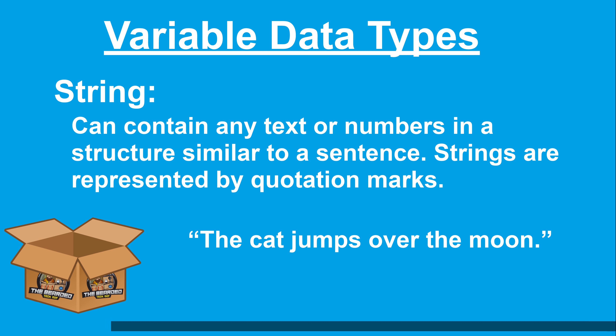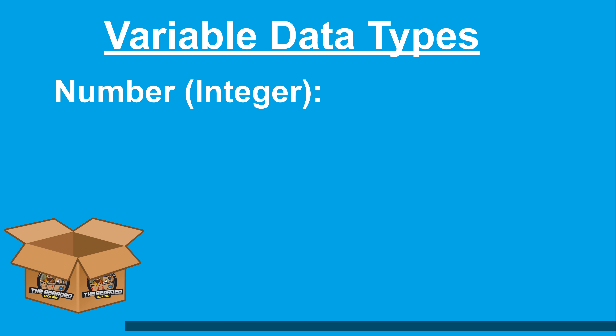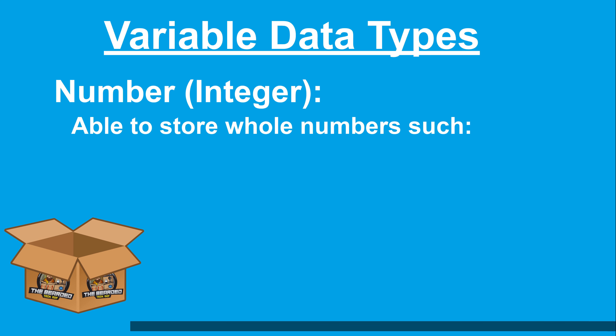Instead, you should use one of the two available number types. The first number type is integer. Integer variables are able to store whole numbers — for example, the number 1 or the number 9001.